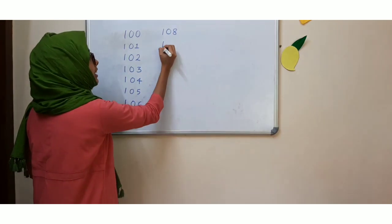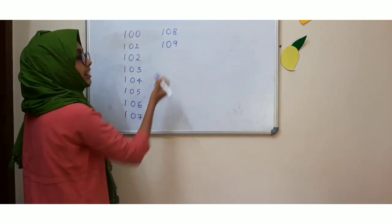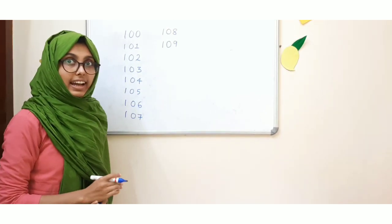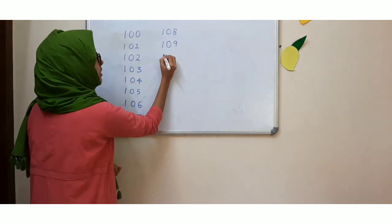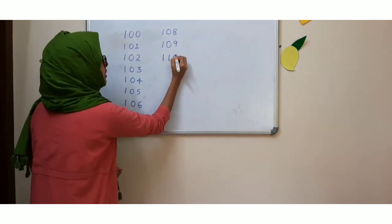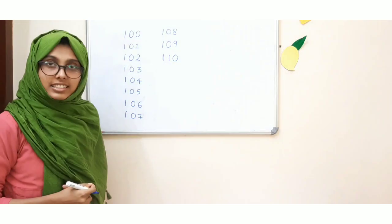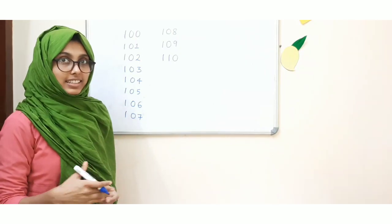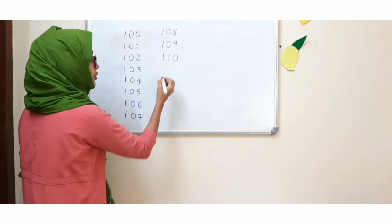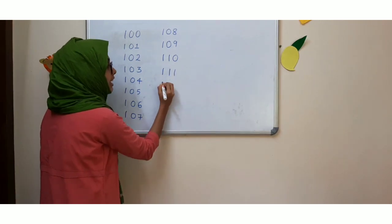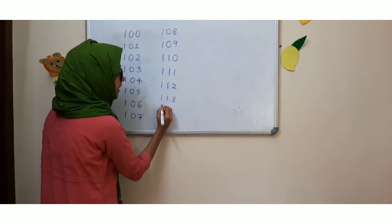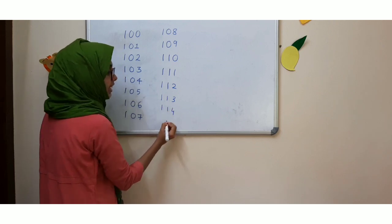After 100 and 9, what will be the next number? 100 and 10. So now what will be the next number? 100 and 11. So 111, 112, 130, 140 — like this.